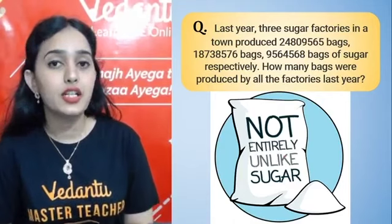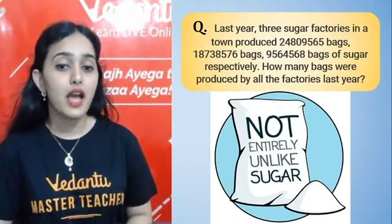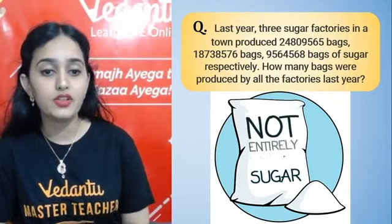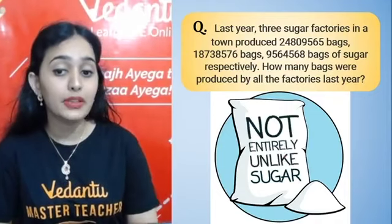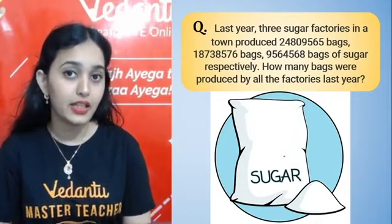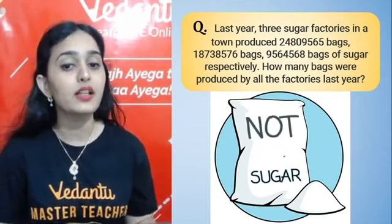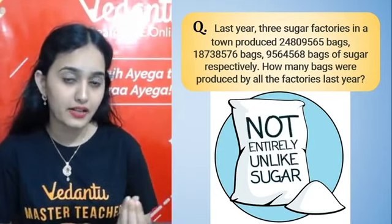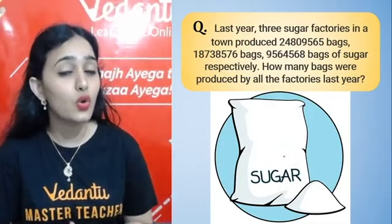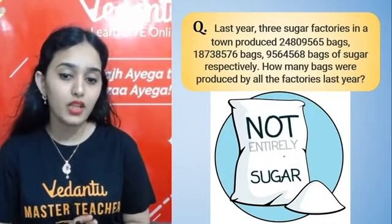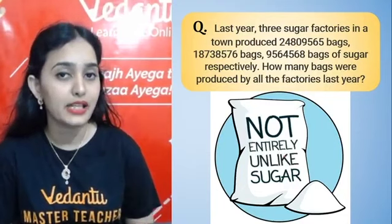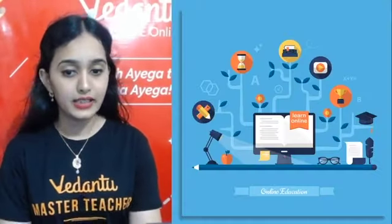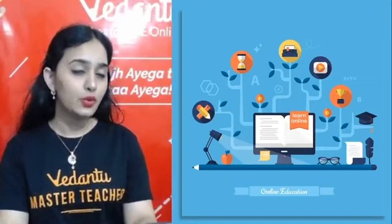Next question: last year, three sugar factories in a town produced a certain number of bags of sugar each. How many bags were produced by the factories in total last year? Three sugar factories produced different amounts, so find the total bags produced by all factories combined in one year.